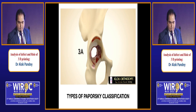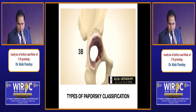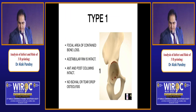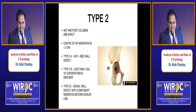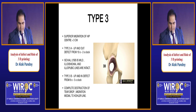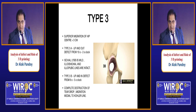Type 3A: the center of hip migration is more than 3 cm — an 'up and out' defect from 10 o'clock to 2 o'clock position. Type 2A is a superior plus medial wall defect; 2B is less than one-third of the superior rim deficient; 2C is a broken Kohler line with columns intact. Type 3B is an 'up and in' defect from 9 o'clock to 5 o'clock position, with complete destruction of the teardrop and migration medial to the Kohler line.